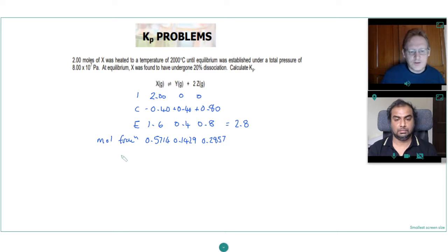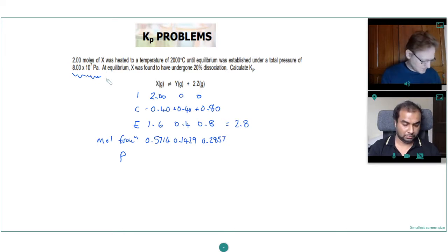And then we want the partial pressures of these. And to get the partial pressure, we multiply the mole fraction by the total pressure. We've been given in the equation here 8 times 10 to the 7, so 0.5714 times 8 times 10 to the 7.